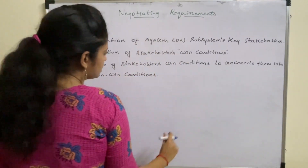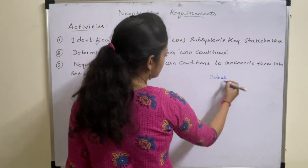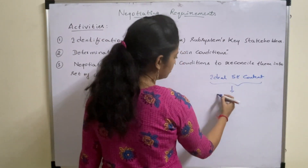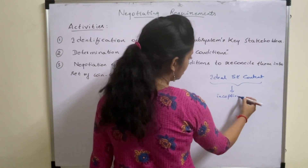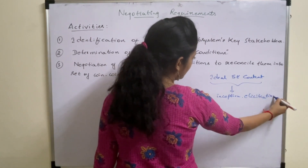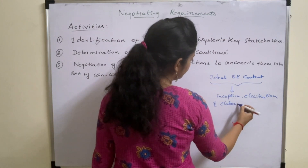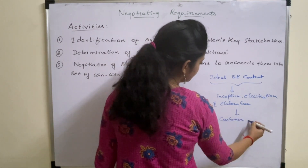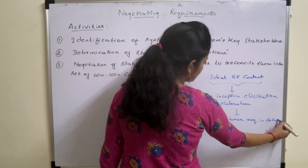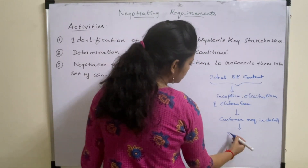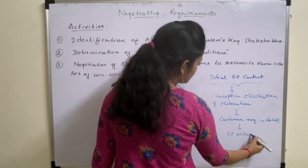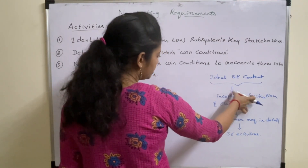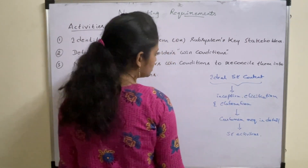In an ideal software engineering context, we first need to perform inception, elicitation, and elaboration. These tasks mainly determine customer requirements in detail in order to go further into software engineering activities. So first these activities are performed to determine customer requirements in detail before going into software engineering activities.